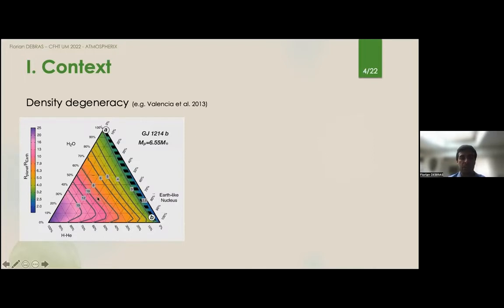There is a huge degeneracy in the composition if you just have the density. So to lift this degeneracy we don't have much choice unfortunately, and this is why after a decade of planetary discovery we're really entering a decade of atmospheric characterization. Indeed if you're able to characterize the atmospheres of this planet you might have enough information to decipher between the different possibilities of composition.